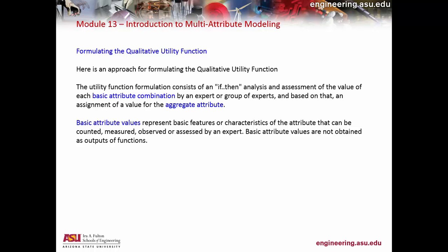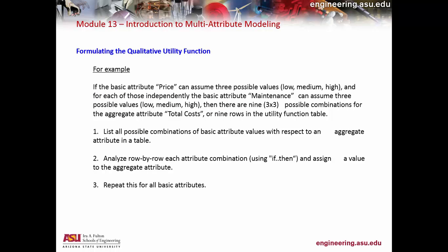How do you form qualitative utility functions? When we talk about qualitative utility, we're really getting at: is this good, is this bad, is this okay? The idea is that you can use expert opinion. You look at the different combinations and give an assessment of how acceptable something is. For example, price can be considered low, medium, or high; maintenance can have three values — giving you nine combinations to go through.